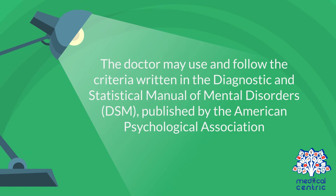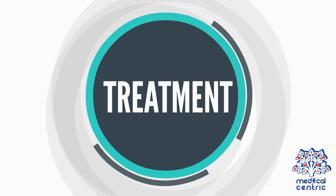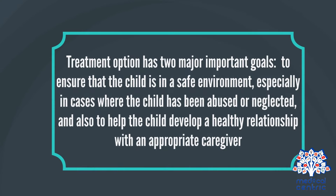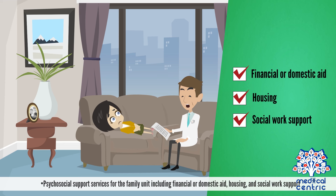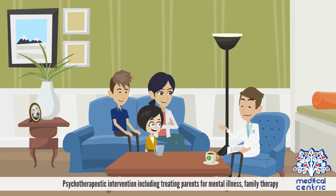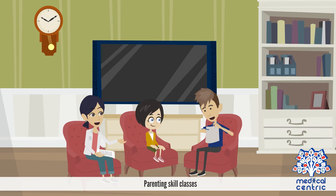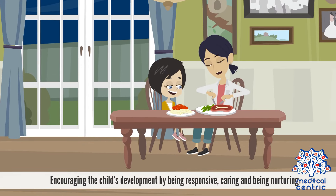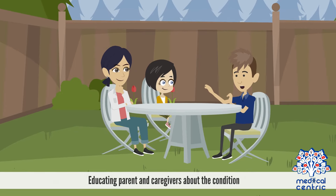The doctor may use and follow the criteria written in the Diagnostic and Statistical Manual of Mental Disorders, or DSM, published by the American Psychological Association. Treatment has two major goals: to ensure that the child is in a safe environment, especially in cases where the child has been abused or neglected, and to help the child develop a healthy relationship with an appropriate caregiver. Treatment strategies include psychosocial support services for the family unit, psychotherapeutic intervention, treating parents for mental illness, family therapy, parenting skill classes, encouraging the child's development by being responsive, caring and nurturing, and educating parents and caregivers about the condition.